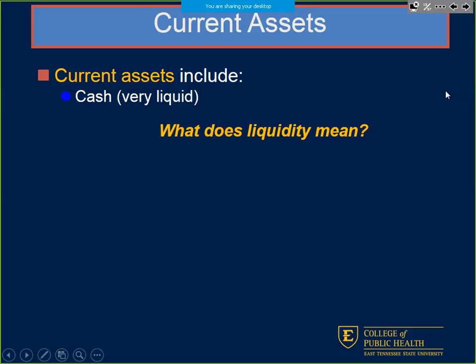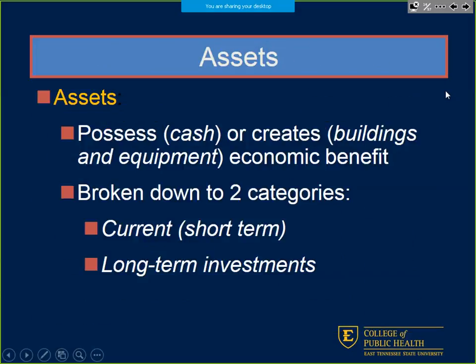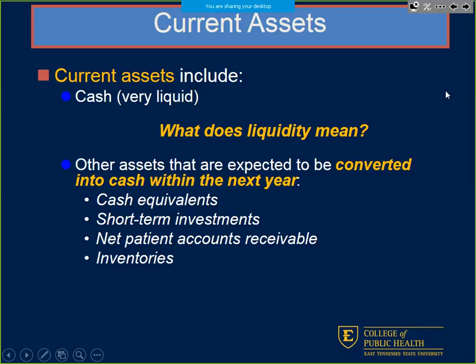What does liquidity mean? If it's liquid — for example, if one of our loan holders calls up a loan, liquidity means we can take that cash and pay it immediately. It doesn't take a lot to convert it. So they're listed in order of liquidity: very liquid, next liquid, and on down — not so liquid. We can't convert land over fairly quickly, especially in today's market.